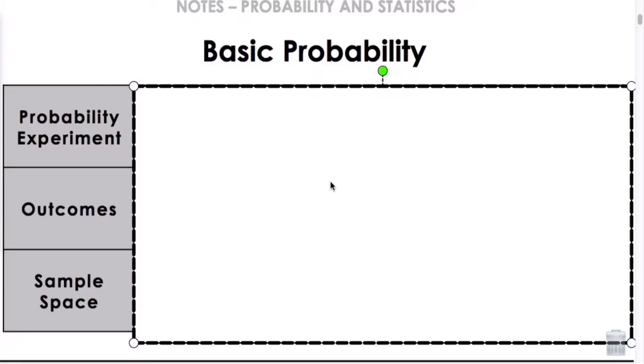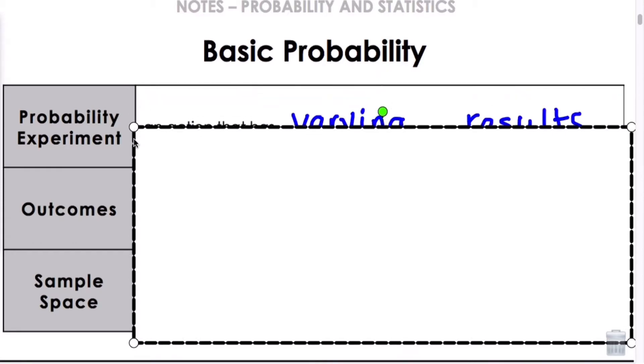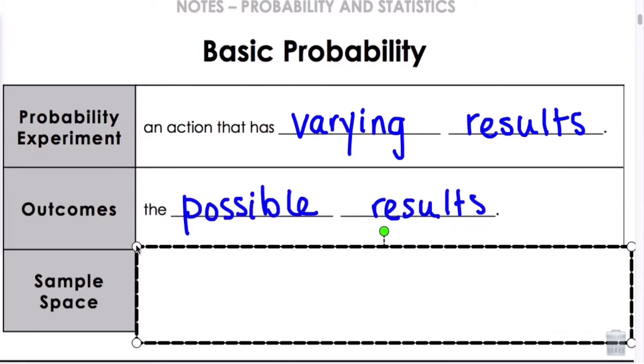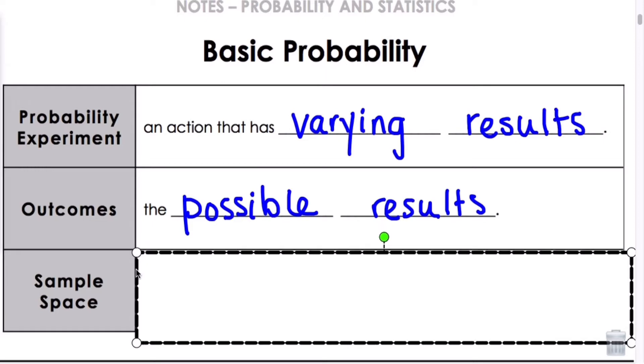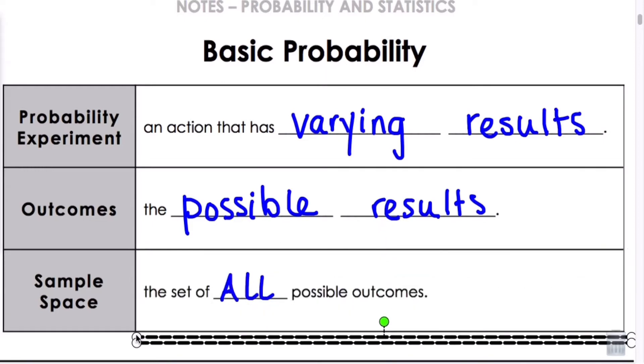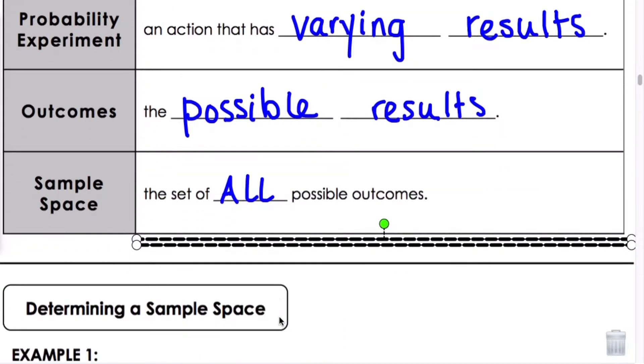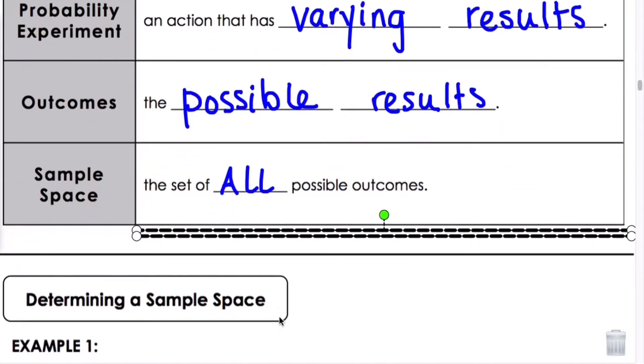This is lesson 11.1 on basic probability. Let's look at some definitions. A probability experiment is an action that has varying results. Outcomes are the possible results. Sample space is the set of all possible outcomes.